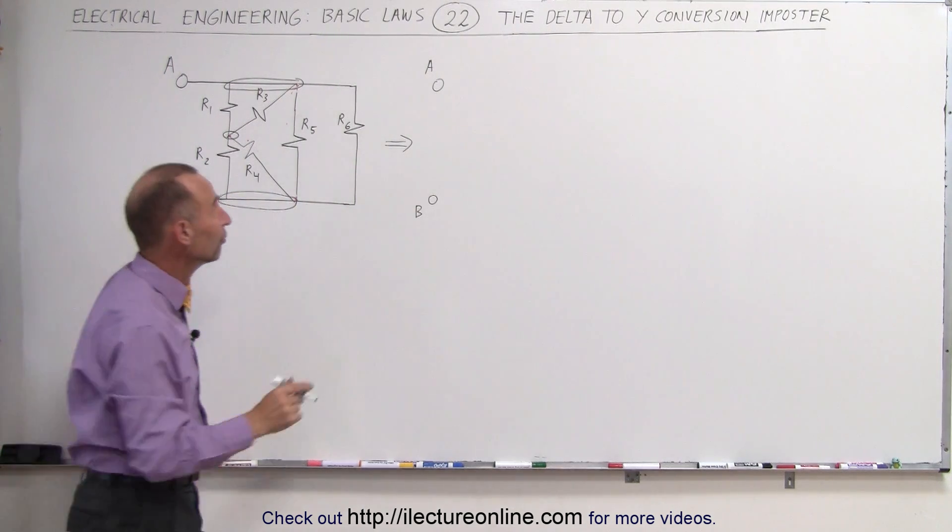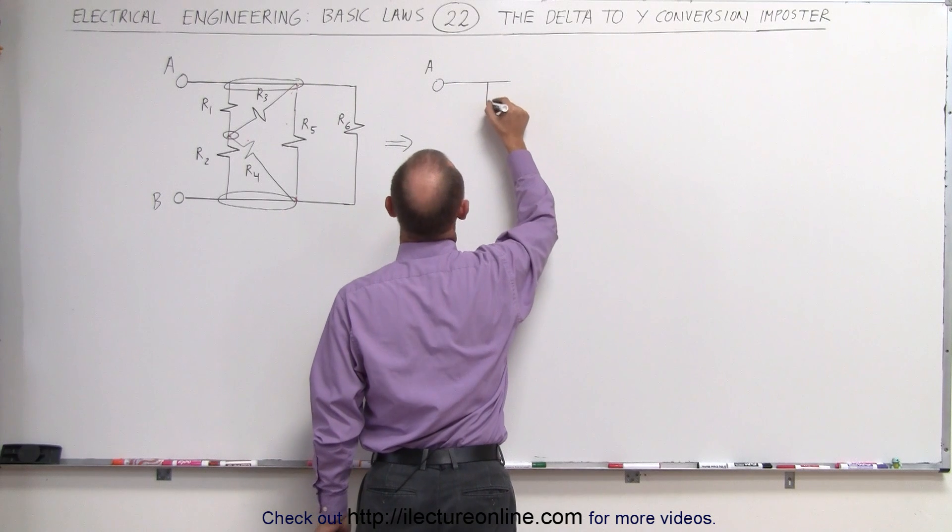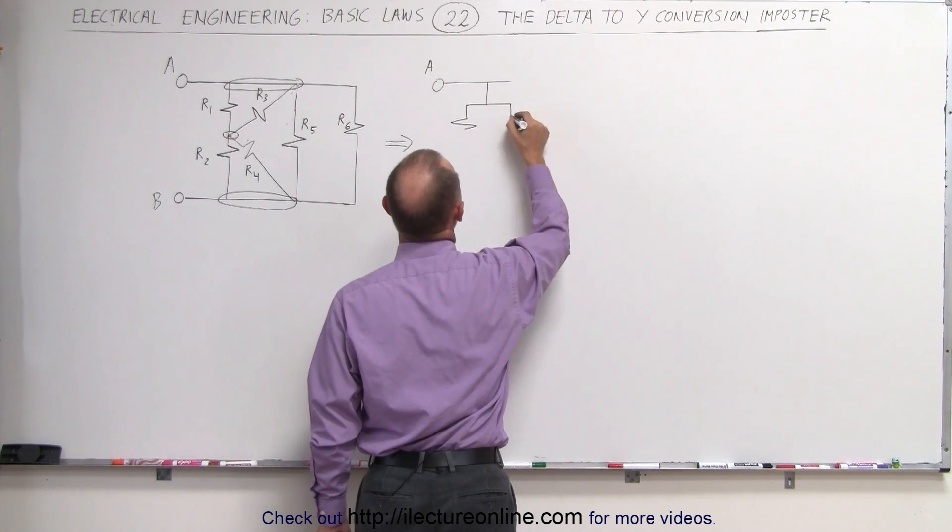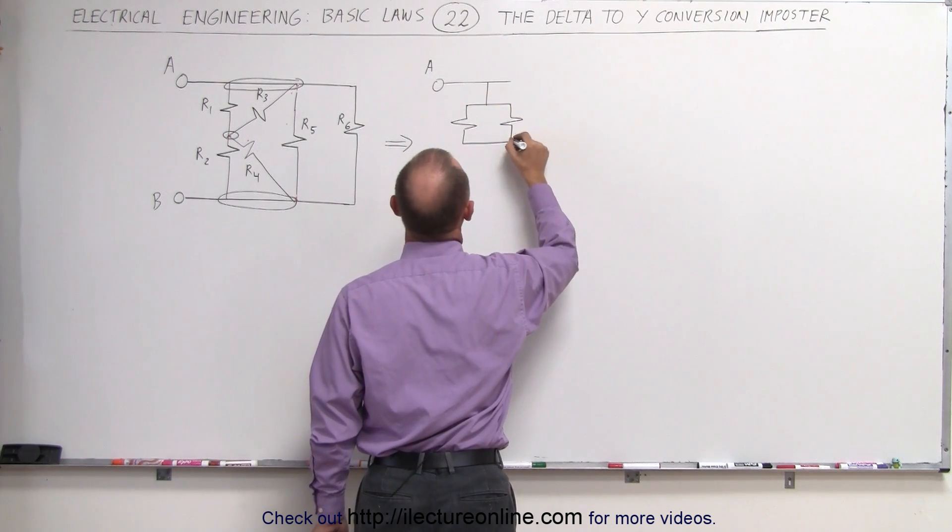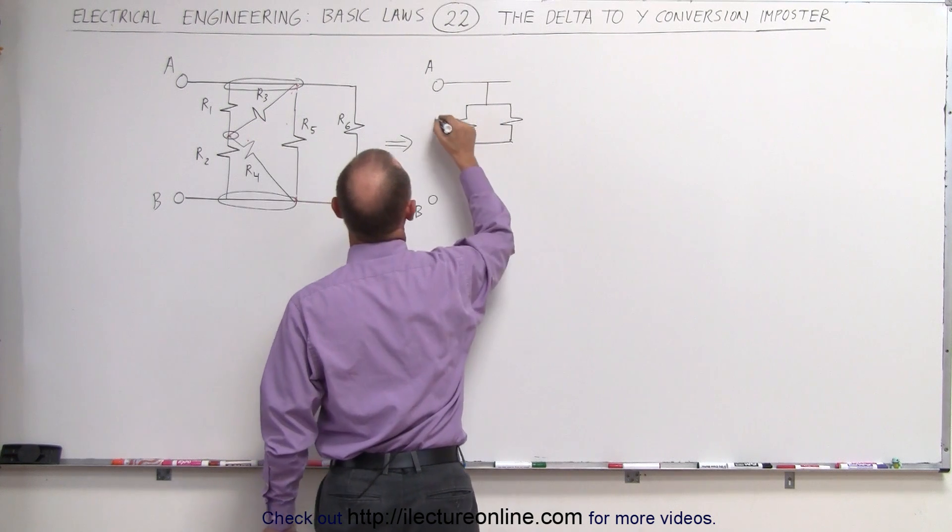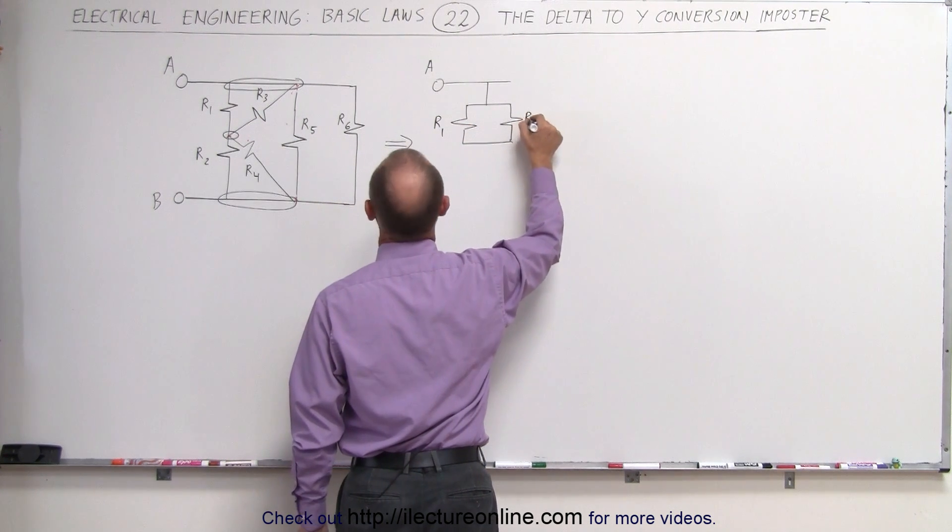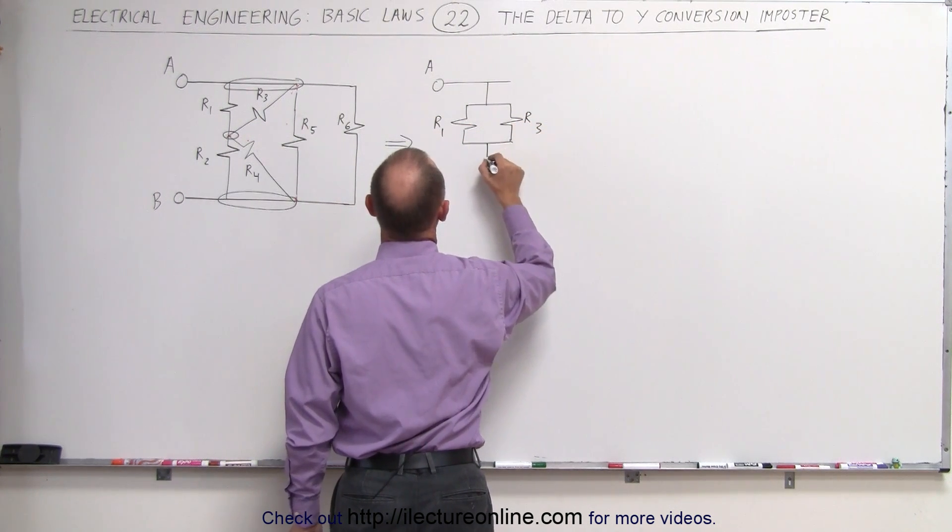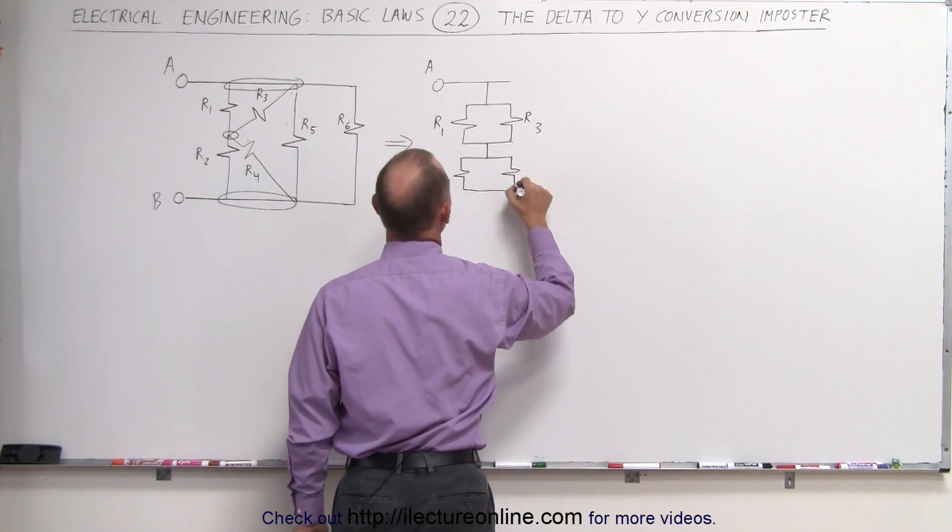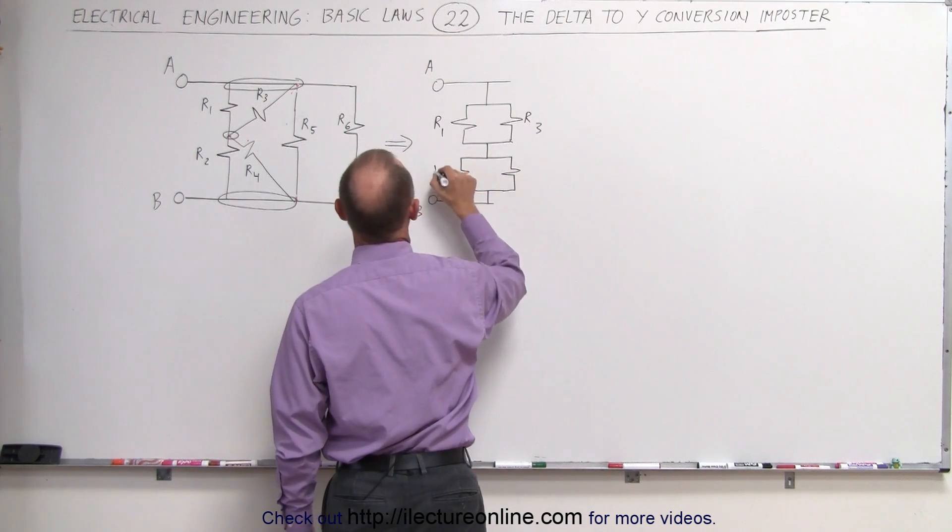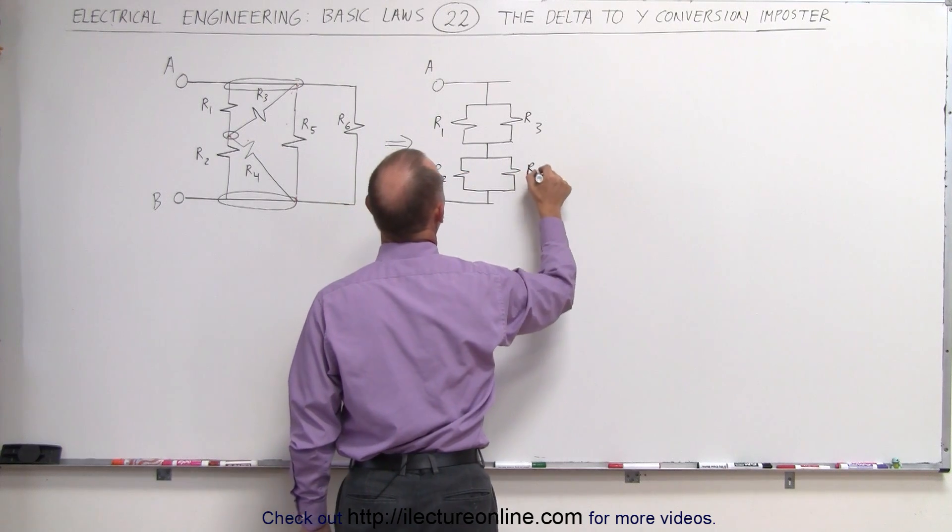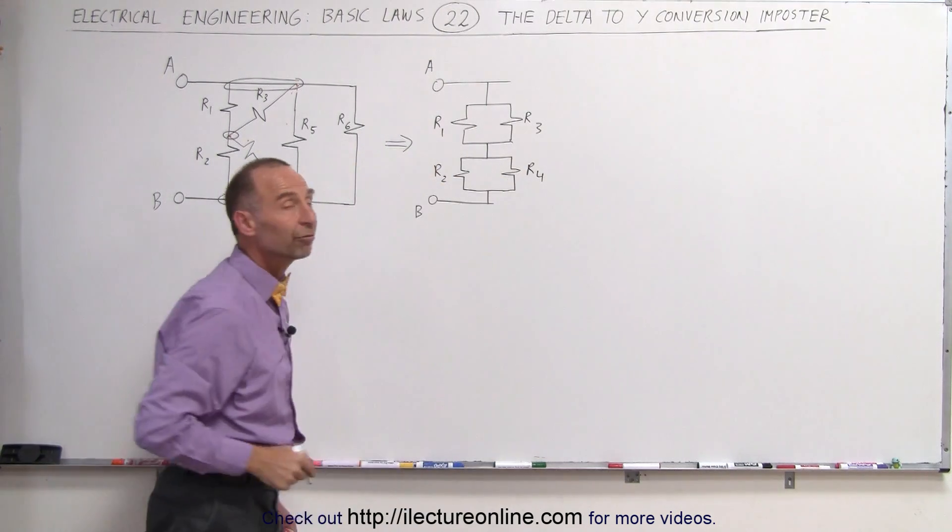So at the very least you can redraw the circuit as follows and have those come back together. So this would be resistors R1 and R3, and then again over here we can do it again. This would be a resistor R2 and R4, and we know how to deal with it in that format.